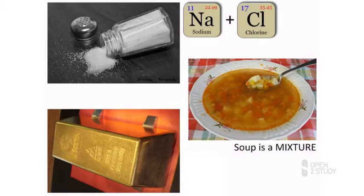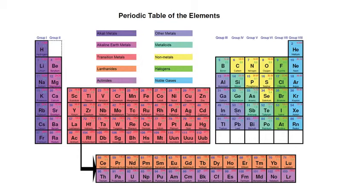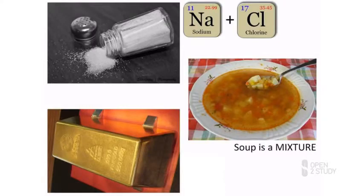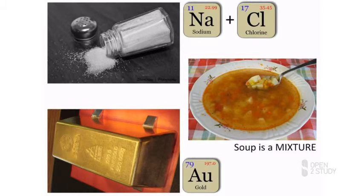The final example that we have there, a gold bar. We wish we had a gold bar. If you again scout around your periodic table, find element number 79, you'll find that that element is gold. So our gold bar is made of a single pure element.